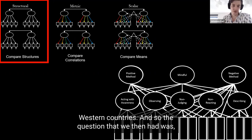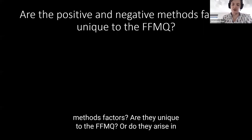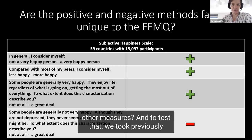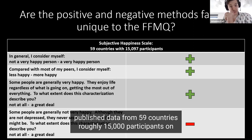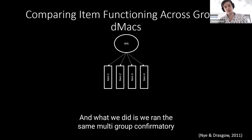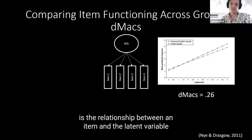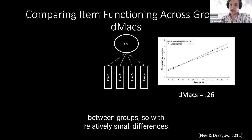The question that we then had was how do those methods factors, this positive-negative methods factors, are they unique to the FFMQ or do they arise in other measures? To test that we took previously published data from 59 countries, roughly 15,000 participants, on the Subjective Happiness Scale that has three positive and one negative items. What we did is we ran the same multi-group confirmatory factor analysis, but we extracted effect sizes of item differential functioning, which essentially tests how different is the relationship between an item and the latent variable between groups.